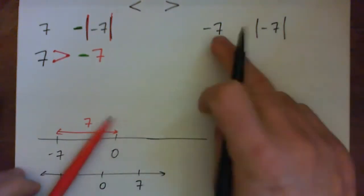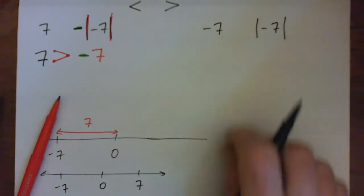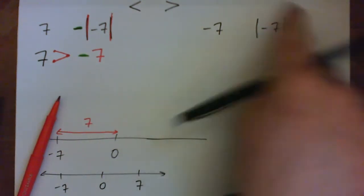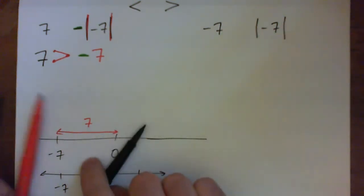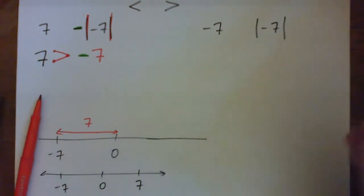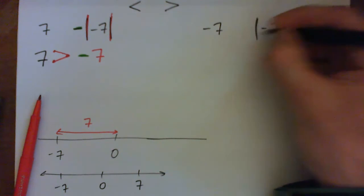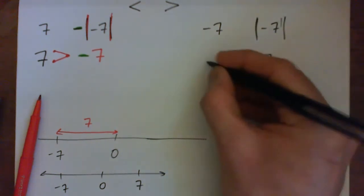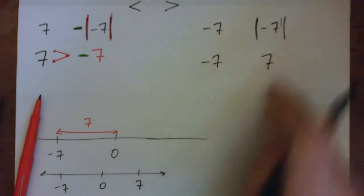So, how should the inequality sign go? Well, let's calculate this first. What's the absolute value of negative 7? Absolute value of negative 7 is just 7. So we have negative 7 on the left, positive 7 on the right.